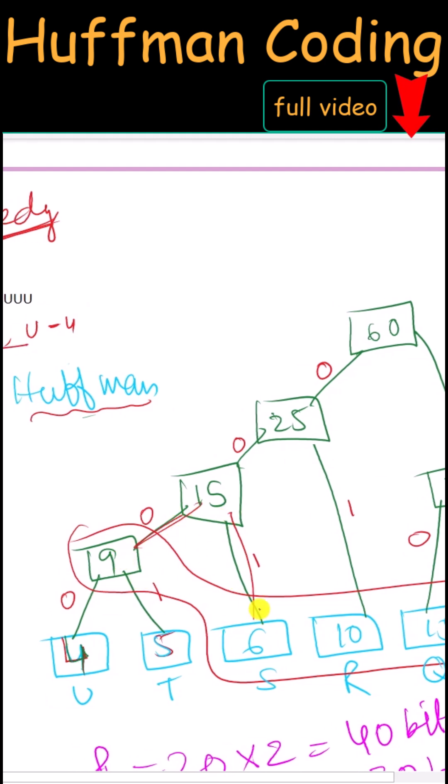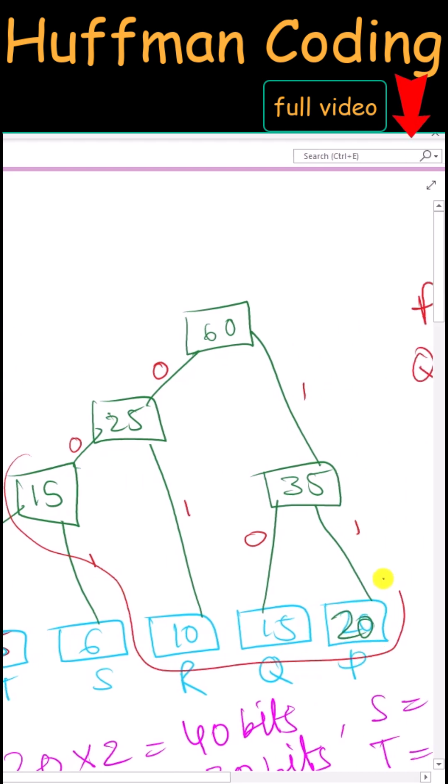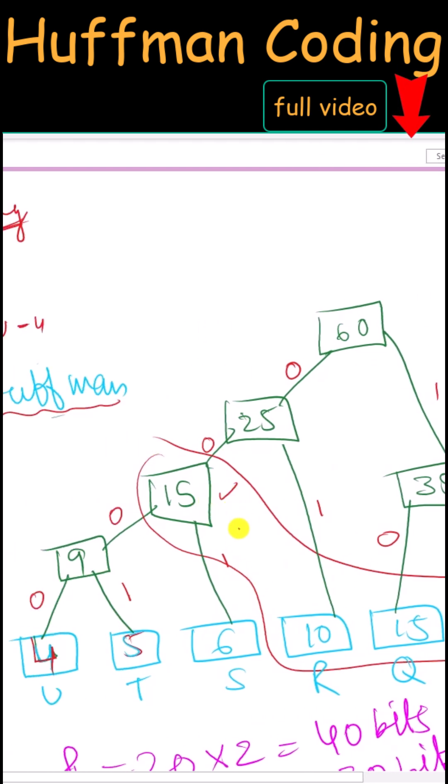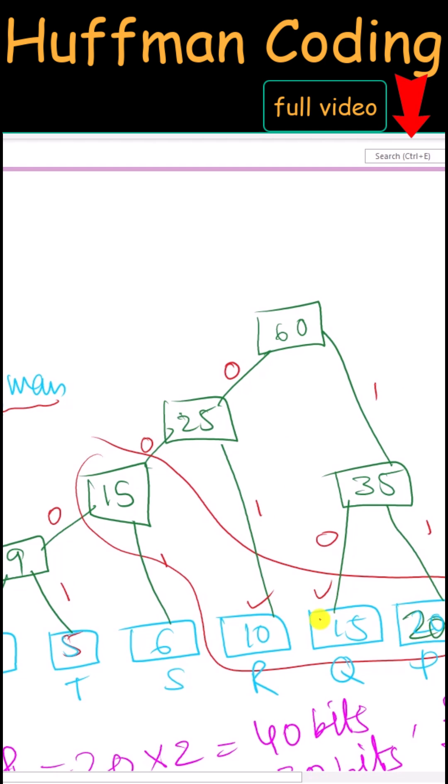We have merged 9 and 6, so the new node is 15. Now among these frequencies, the minimum two can be 15 and 10, or we can take 10 and 15.